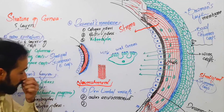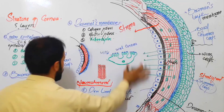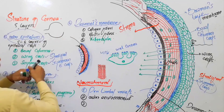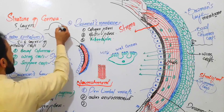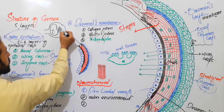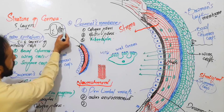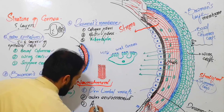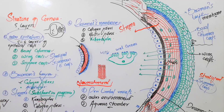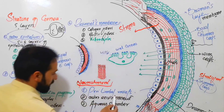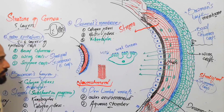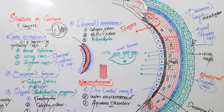The third important source of nourishment: there is an aqueous chamber in the eye. The cornea from inside also gets its nourishment from the aqueous chamber or aqueous humor. So the cornea gets its nourishment from the peri-limbal vessels, from the outer environment, and from the aqueous chamber. This was all about the cornea — its structure and the important points regarding the cornea.